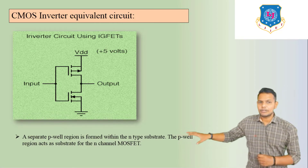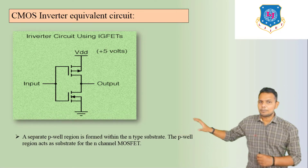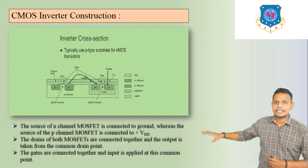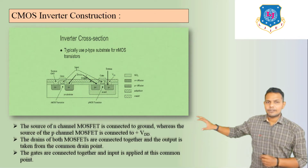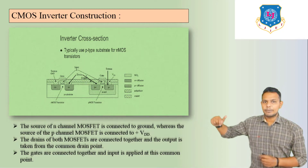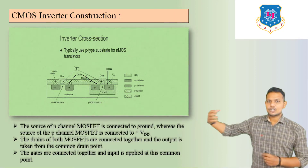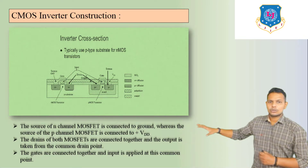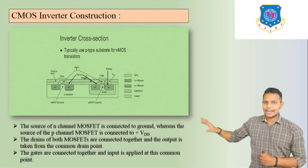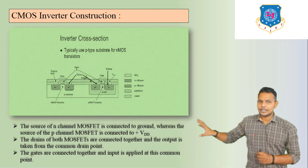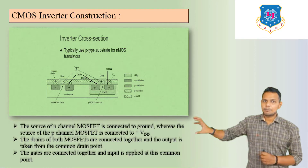The P region is formed within the N-type substrate. The P-well region acts as the substrate for the N-channel MOSFET. Here we can see the connection showing where to connect the input terminal and output terminal, and which terminal is grounded. VDD is common. The source of the N-channel MOSFET is connected to ground, whereas the source of the P-channel MOSFET is connected to +VDD.